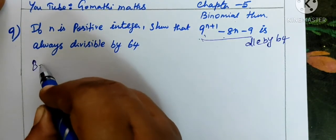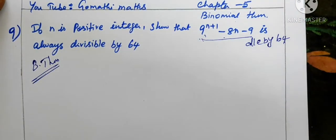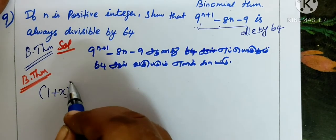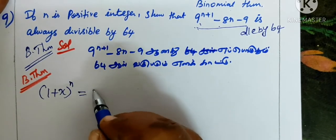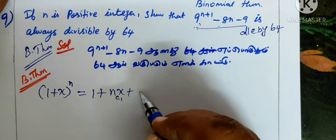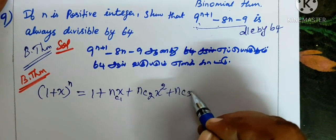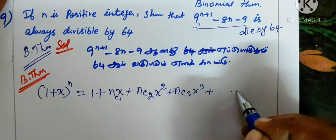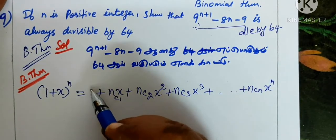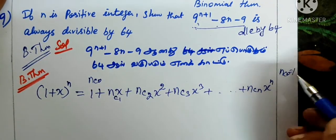We use the binomial theorem. The binomial theorem states: 1 plus x whole power n equals 1 plus nc1 x plus nc2 x squared plus nc3 x cubed plus... plus ncn x power n.